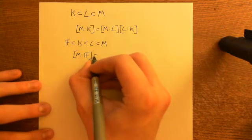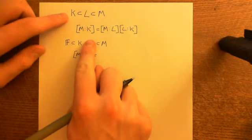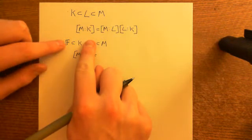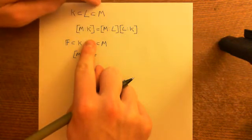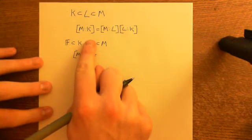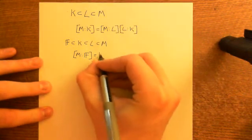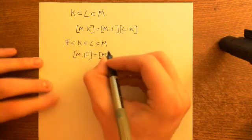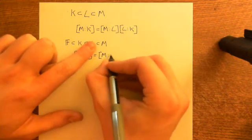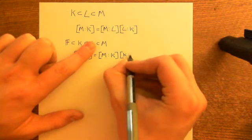What you can do is just cover up L — just imagine it's not there. Now we're back to the three-field case, because we've just got three fields: a field down here, contained within a bigger field, contained within a bigger field yet. So imagine that L is not there and use the Tower Law. We can say this is equal to the degree of M over the next field down, which is K, times the degree of K over F.